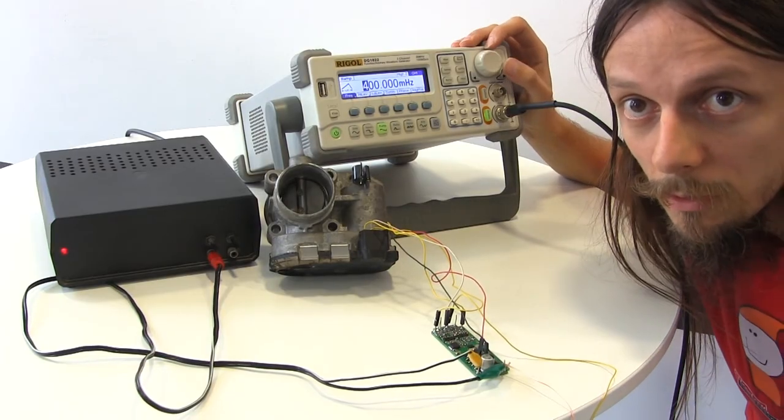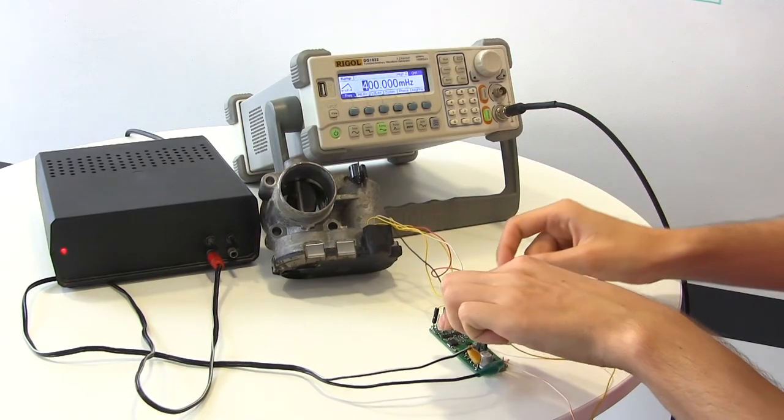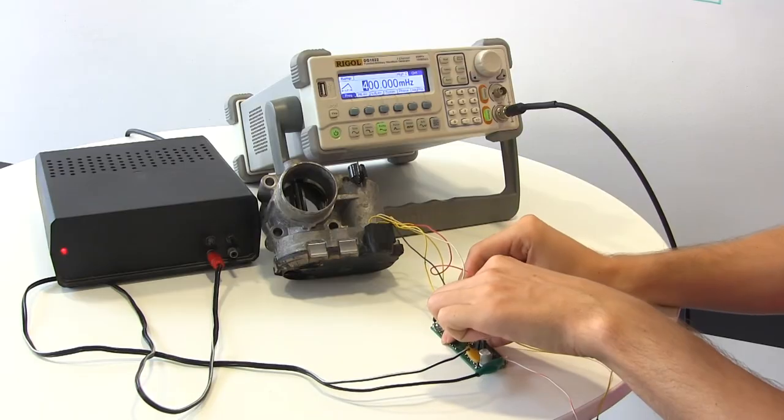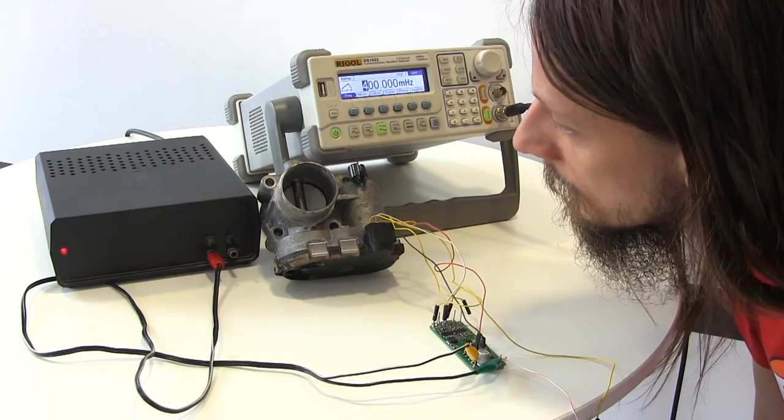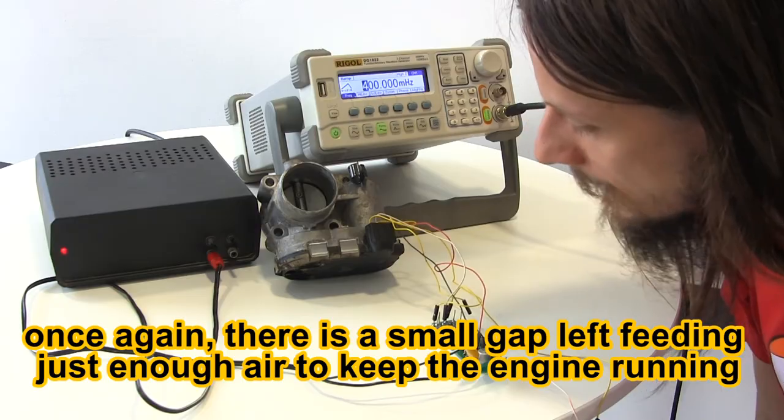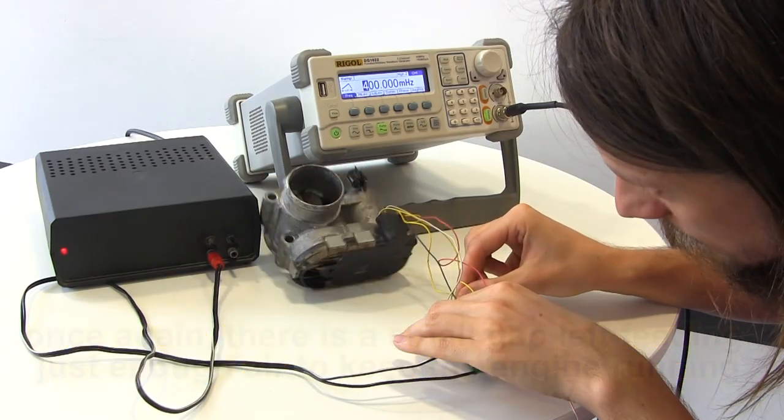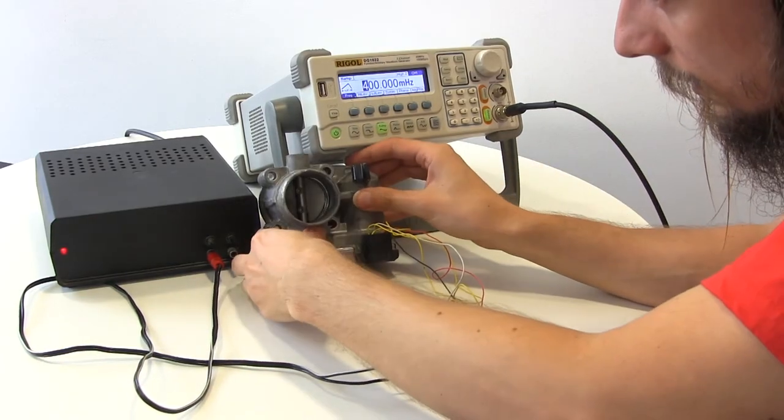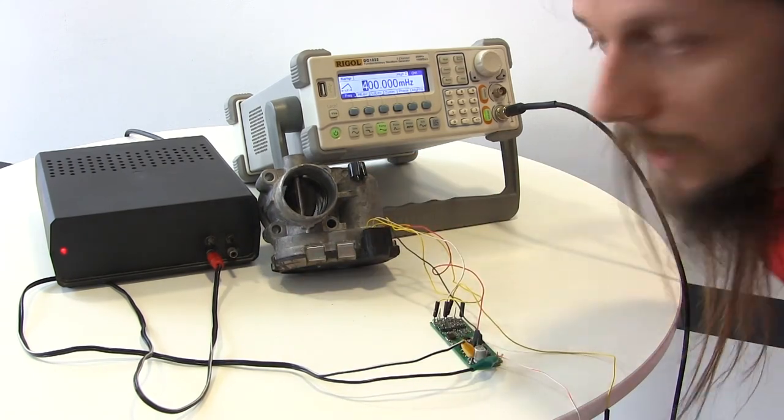Let's check what's going on when I will disconnect one of the wires. As you can see, it's now fully closed because of the spring I told you about. Let's turn it on again. And it's working again. Not a problem at all.